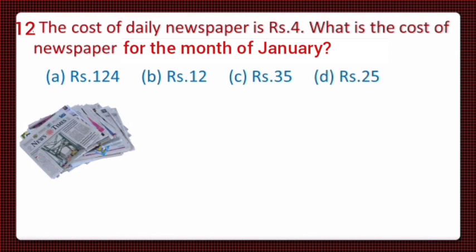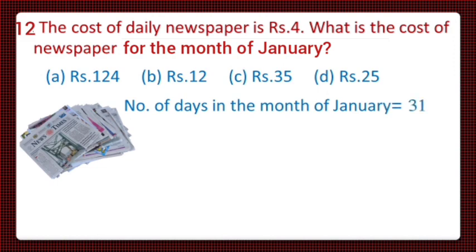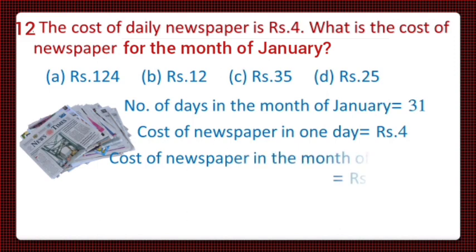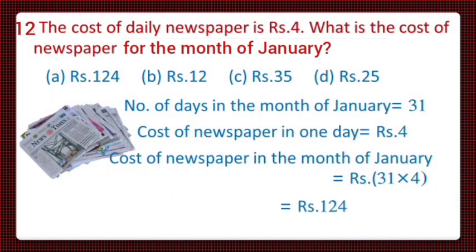First of all, let's see the number of days in the month of January, and that is equal to 31. And the cost of one daily newspaper is equal to rupees 4. We have to find the cost of the newspaper in the month of January, and for that we will multiply 31 with 4. On multiplying we get rupees 124 as the answer, and from the given options, option A is the correct answer. So let's take option A.